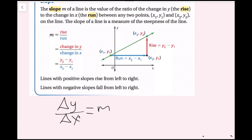So you'll see delta y over delta x, change in y over change in x, y2 minus y1 over x2 minus x1, and rise over run — they all mean the same thing, they're all slope. Lines with positive slopes rise from left to right, and lines with negative slopes fall from left to right, and we're going to talk about that later.